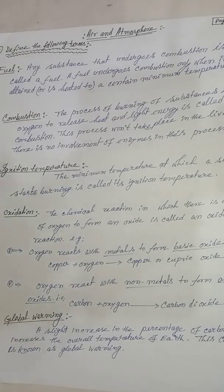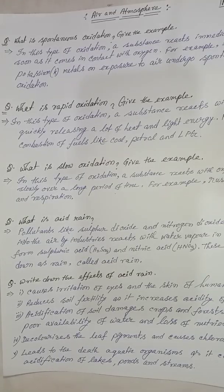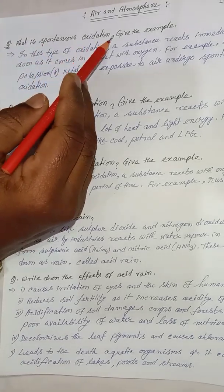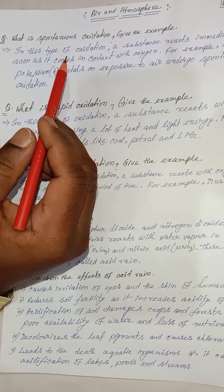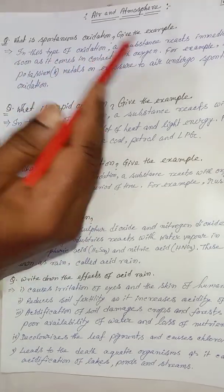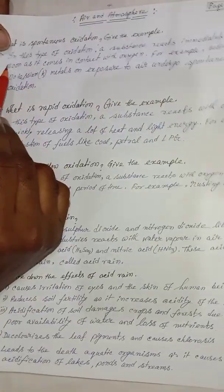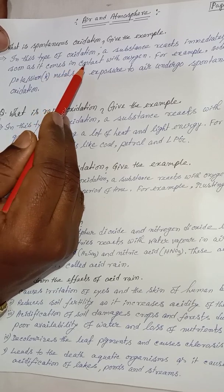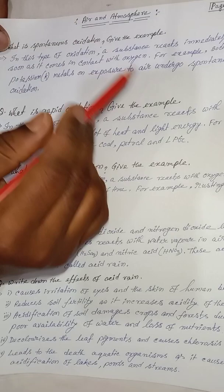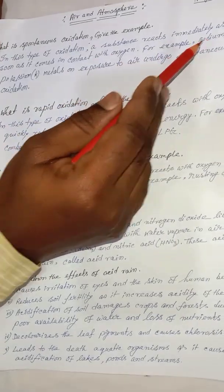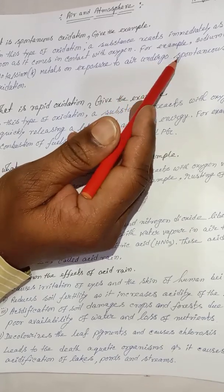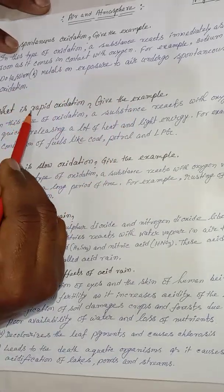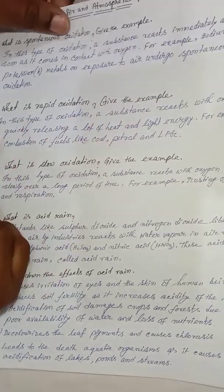Question: what is spontaneous oxidation? Give an example. In this type of oxidation, a substance reacts immediately as soon as it comes in contact with oxygen. For example, sodium and potassium metals explode when exposed to air — this is called spontaneous oxidation.